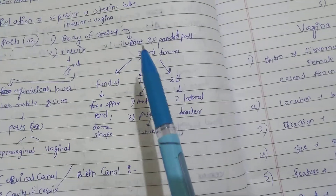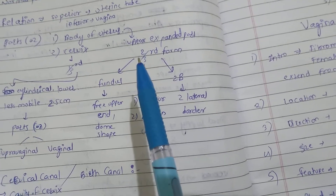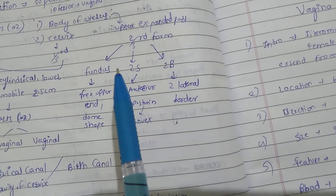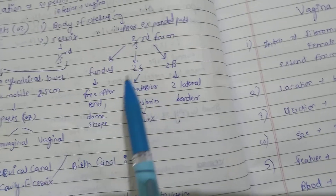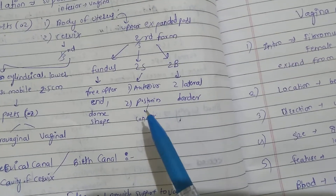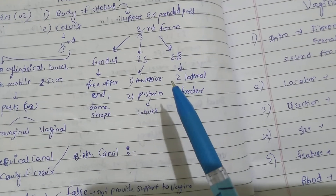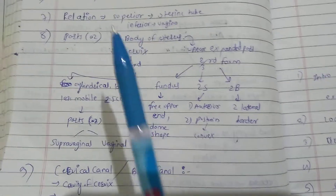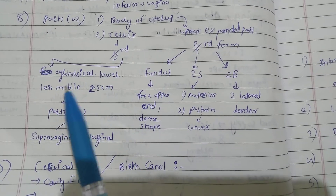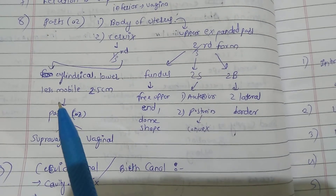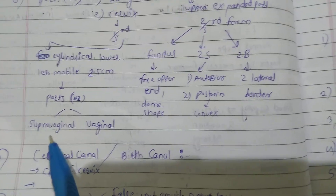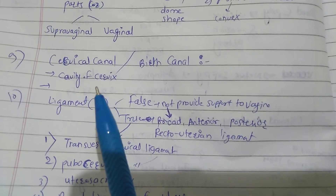The body of the uterus is the upper expanded part — two-thirds of the whole uterus. It contains three parts. The fundus is the free upper end, dome-shaped, with two surfaces: anterior and posterior. The posterior surface is convex. It has two lateral borders. The cervix forms one-third of the total uterus. It is cylindrical, lower, and less mobile. Length is 2.5 cm. It contains two parts: supravaginal and vaginal. The cervical canal is the birth canal and forms the cavity of the cervix.